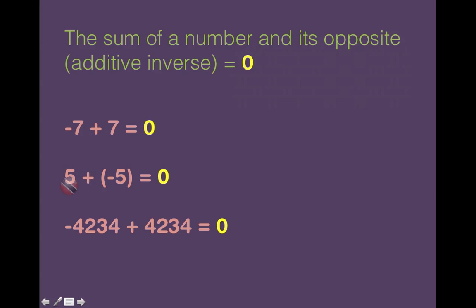In this example, it's positive 5 plus its opposite negative 5, and that is equal to 0. And that will hold for any number and its opposite if you add them together.